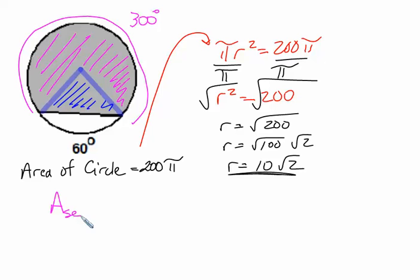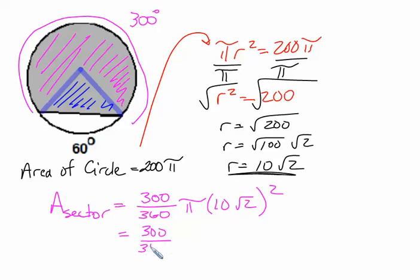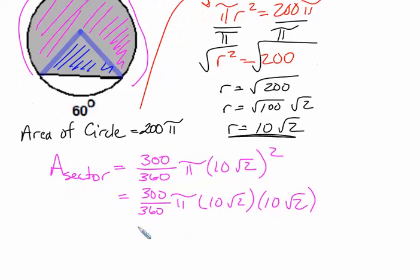So for the first item, which will be the area of our sector, it would be 300 out of 360 times pi times r squared. Now we will write this out 300 over 360 times pi times 10 radical 2 times 10 radical 2. Please watch how we write those things out. And I'm also going to simplify this as 300 over 360 times pi. 10 times 10 is 100. Radical 2 times radical 2 is 2.